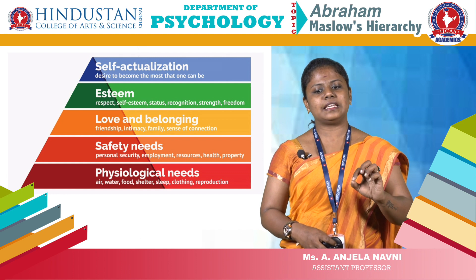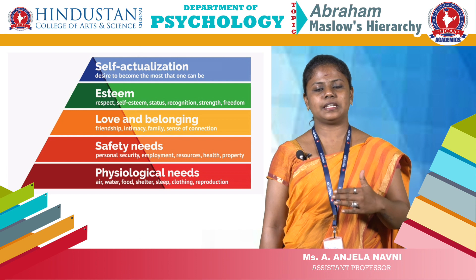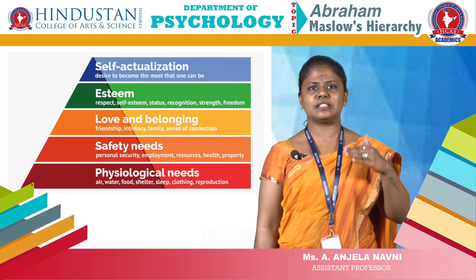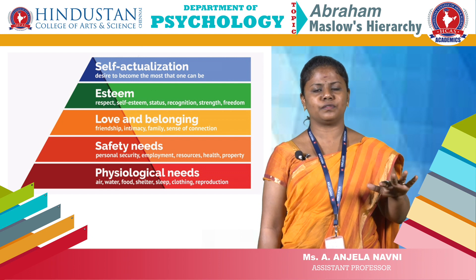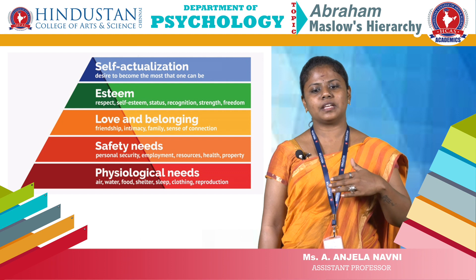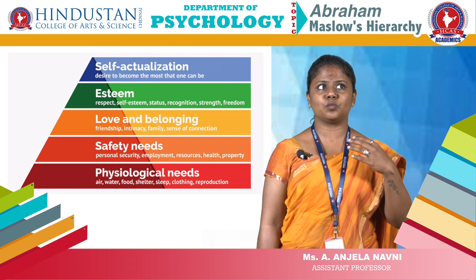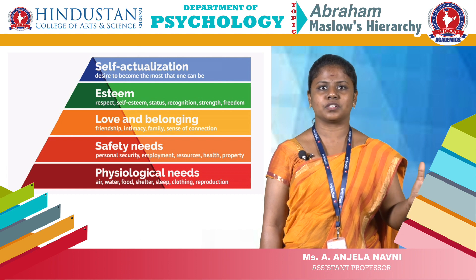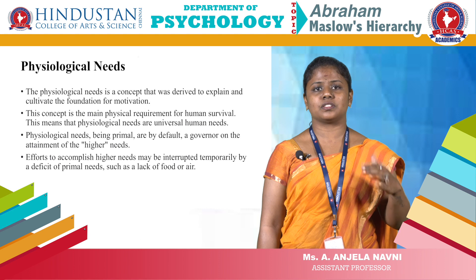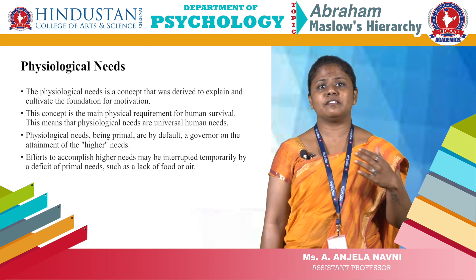Physiological needs and safety needs are basic needs. Only when these two levels of the hierarchy are fulfilled can we go to the next hierarchy. Love and belongingness and esteem needs are psychological needs. And self-actualization is a state where you are fully fulfilled.